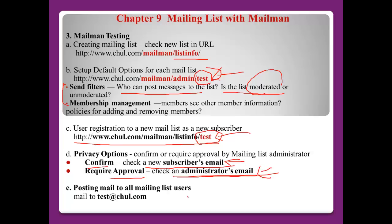Once a new subscriber is successfully registered as a member, they can use the mailing list address — in my case 'test@churl.com'. If this new user sends an email to this address, all members will receive it because they are members of this mailing list.